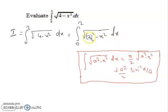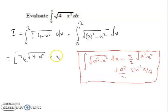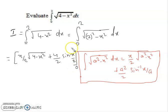What is the value of a here? We can say a is 2, and x is x. Now applying this formula, we write x by 2 times under root 4 minus x square, plus 4 by 2 times sin inverse x by 2, with the limit 0 to 2. Here a is 2, so a square is 4, giving us 4 by 2.